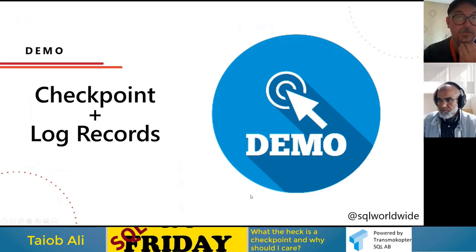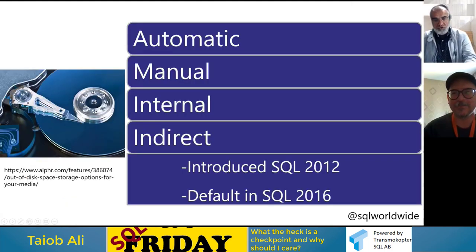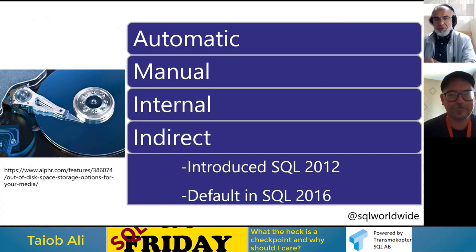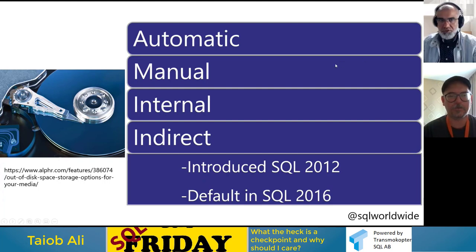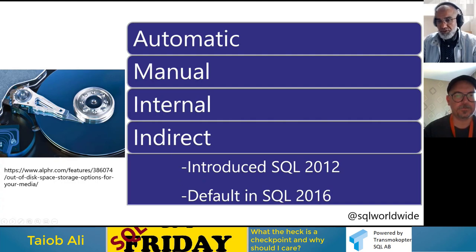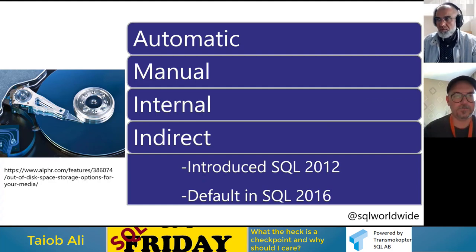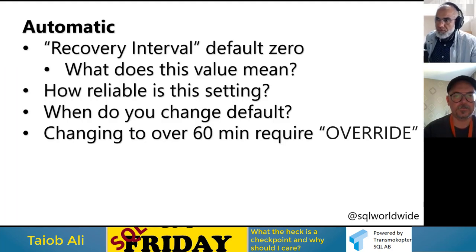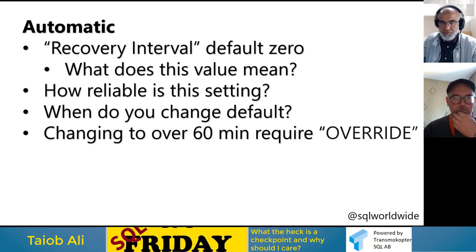No questions, but the demo was interesting. Let's go into a deeper dive on checkpoint types. There are four types, and the indirect checkpoint is the most interesting one because it's where you and I can make choices and influence behavior.